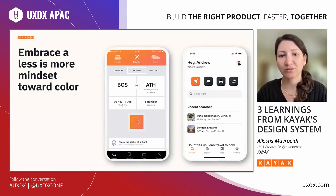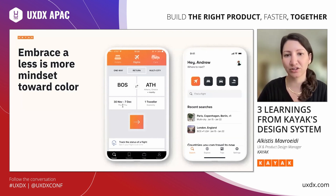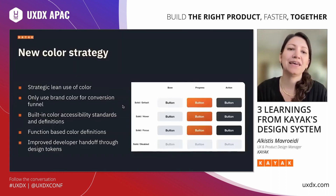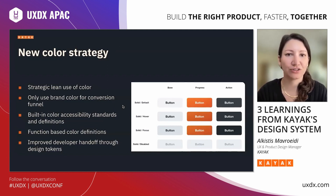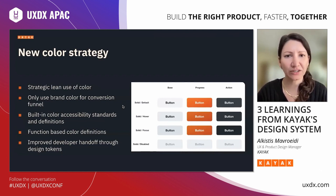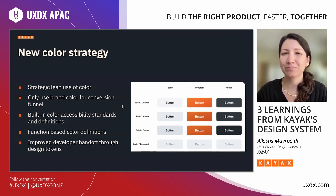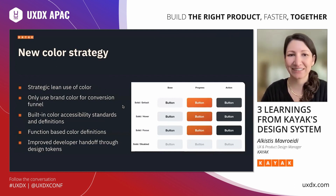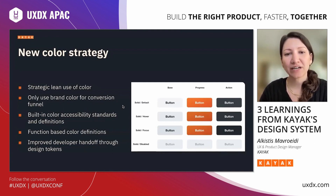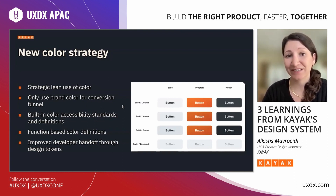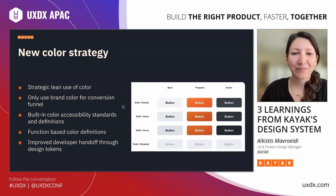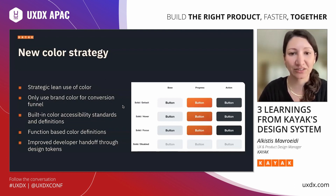Secondly, reliance on color was making scalability to other brands even more of a challenge because of having to translate all these colors to each theme. In order to combat that, we created strategic guiding principles on how to use color and design components that would communicate function in the most optimal way without necessarily relying on color. Starting mobile first was a really helpful tool because it emphasizes the need for clear functionality and the experience cannot rely on backup solutions like hover interactions. Starting mobile first also helped shift our mentality from designing for platforms to designing for screen sizes.